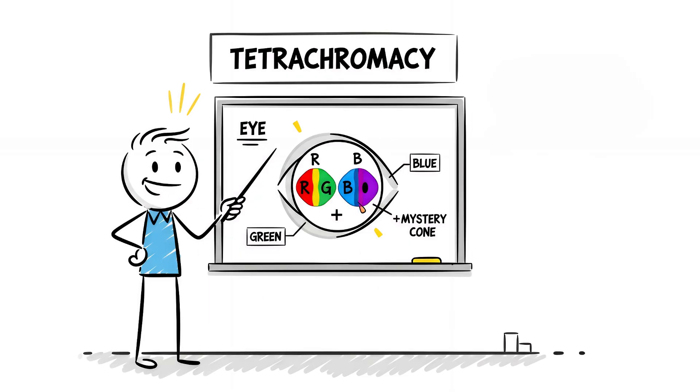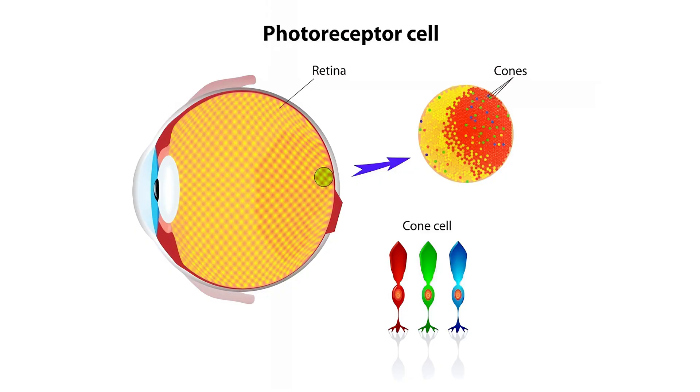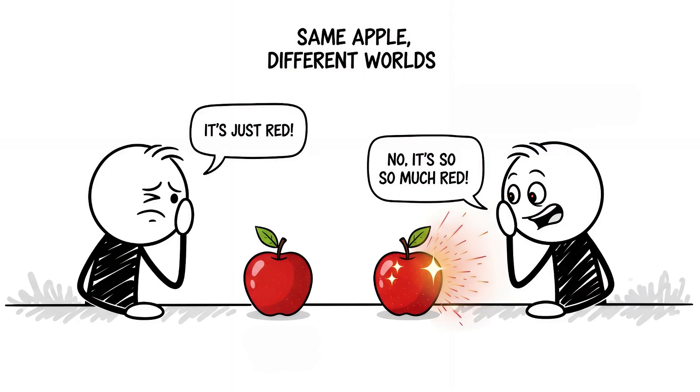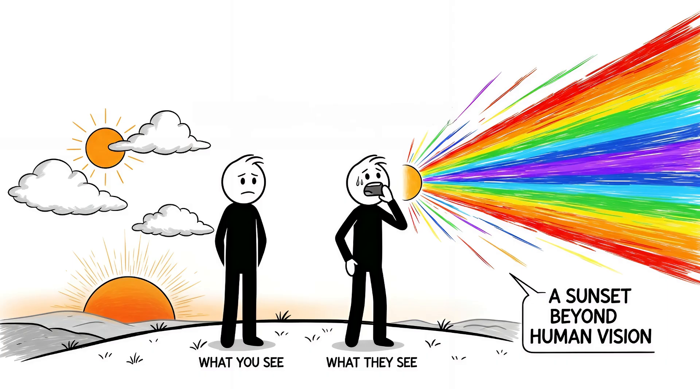It's called tetrachromacy. Normal humans have three kinds of color cones: red, green, blue. Tetrachromats have four. That extra cone unlocks a palette of up to 100 million colors, while you're stuck with one million. A red apple? To them, it's 50 shades of red you've never seen. A sunset? It's a kaleidoscope of colors that literally don't exist in your vision.